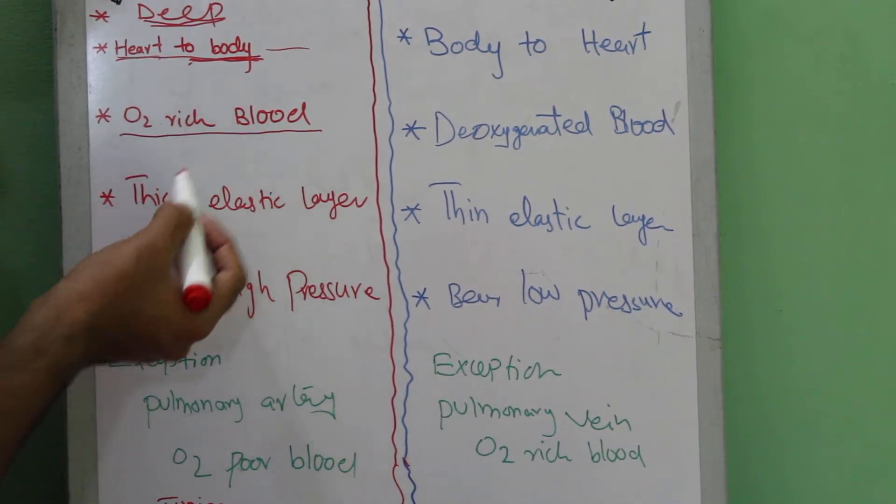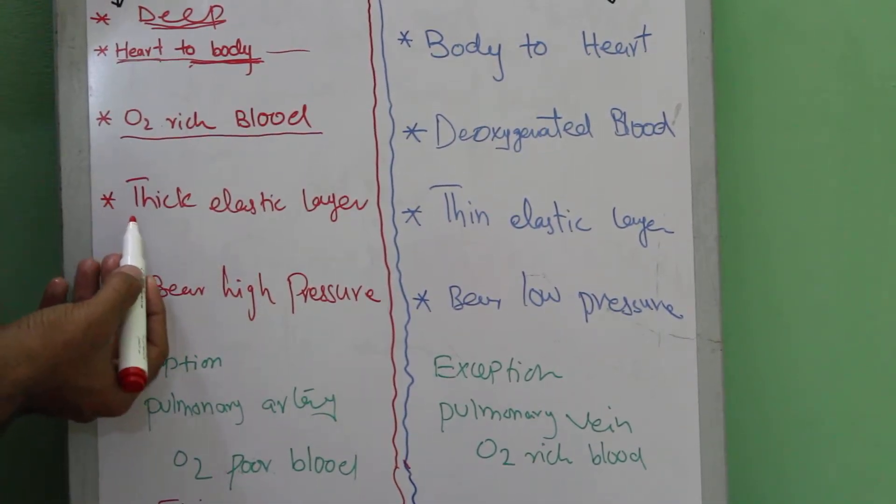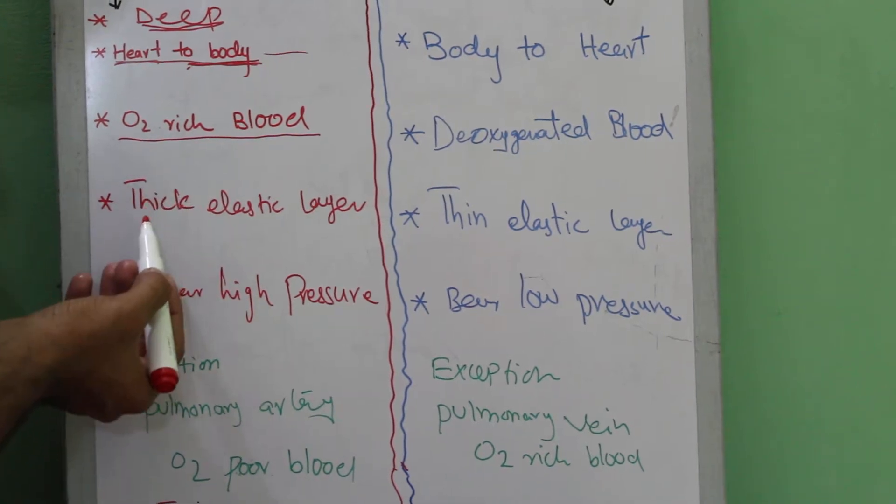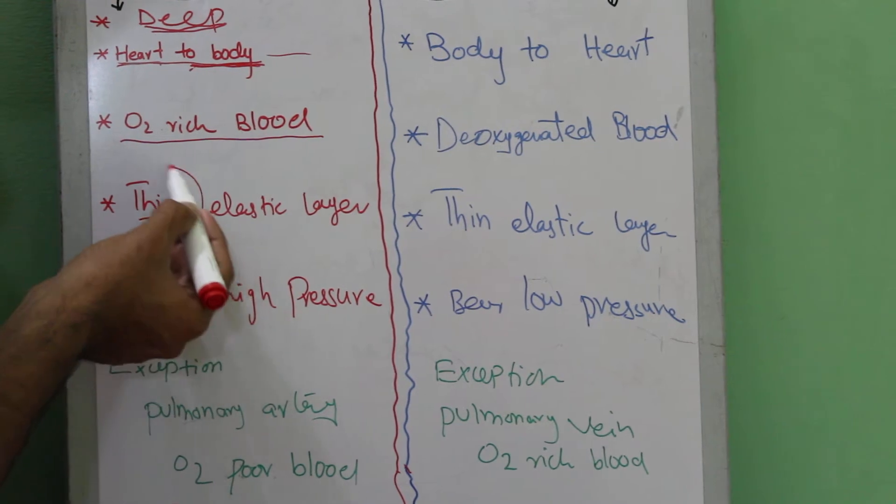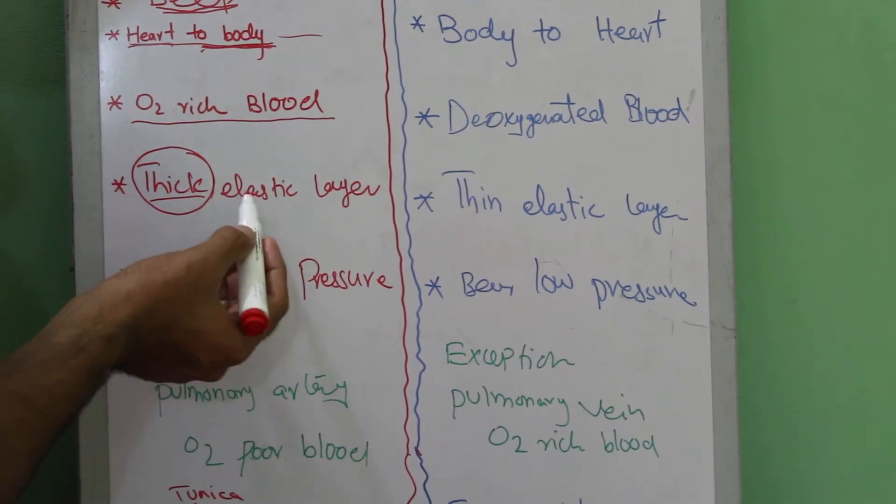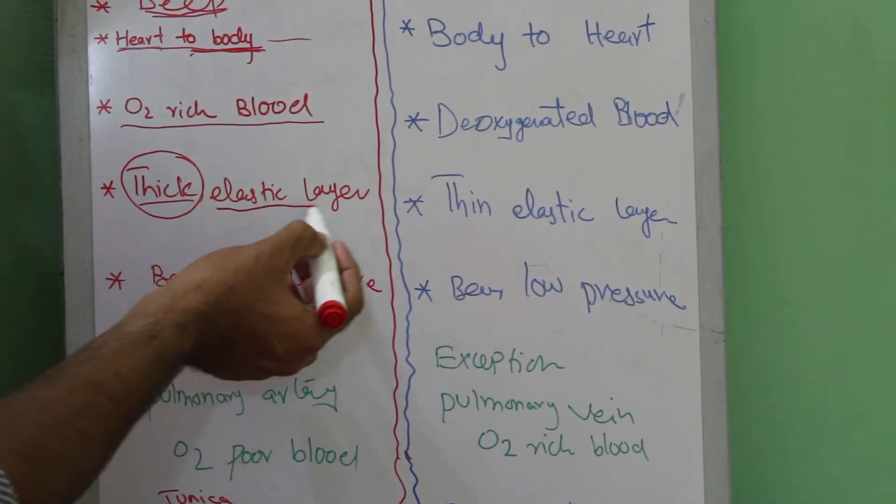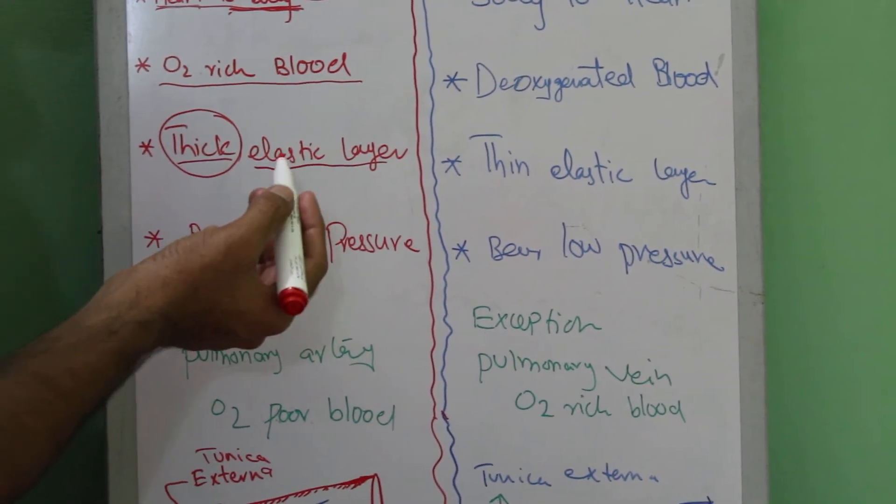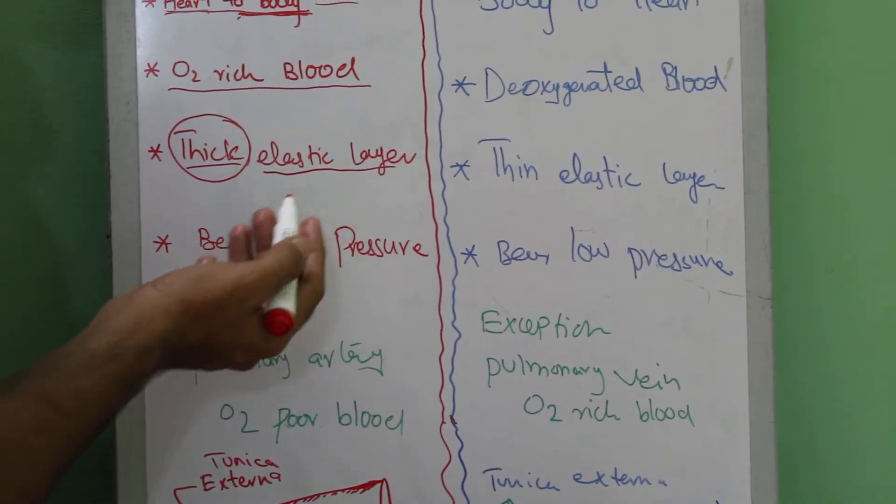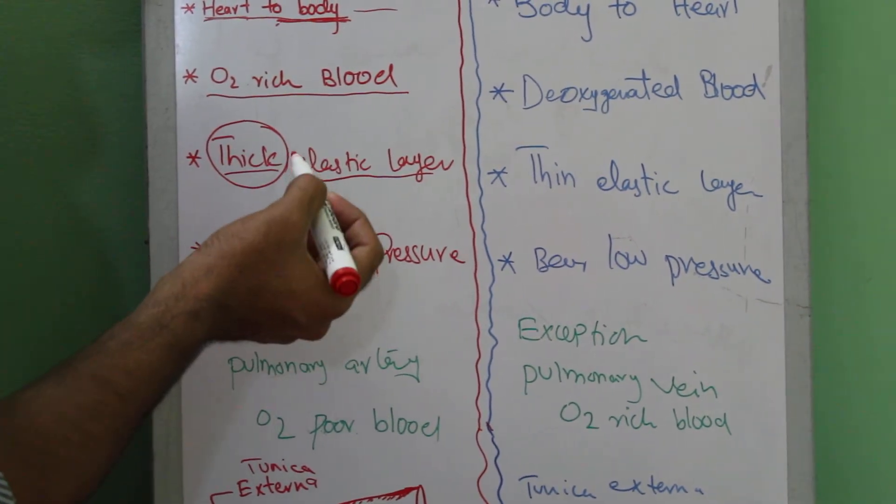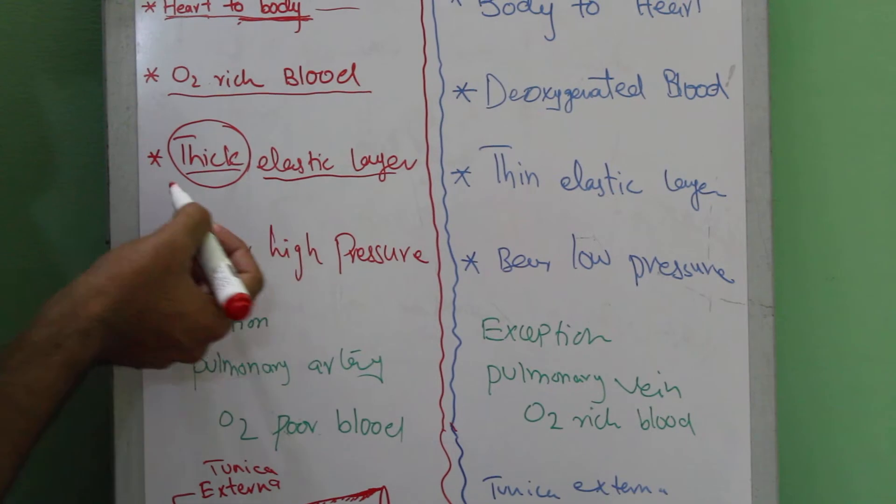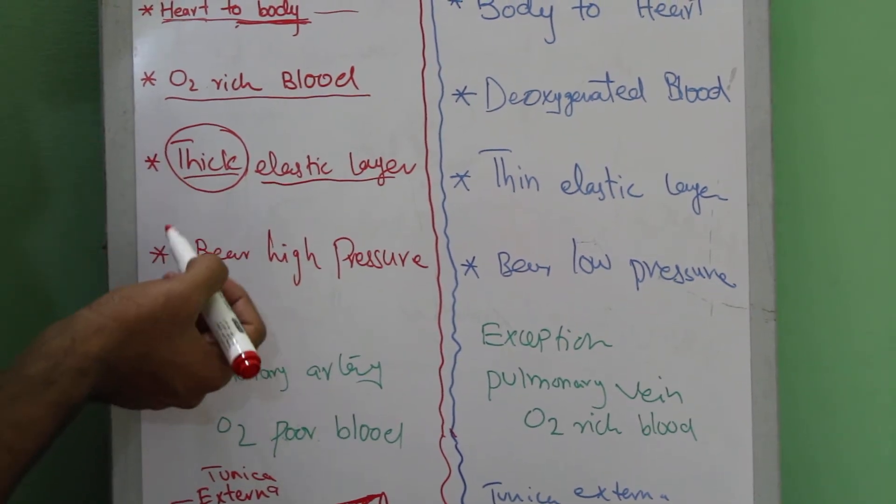The third difference is the artery walls are very thick. The reason that the artery walls are thick is because they need to bear high pressure. When blood is pumped from the heart to the arteries, the blood is at high pressure, so the thick walls bear this high pressure.